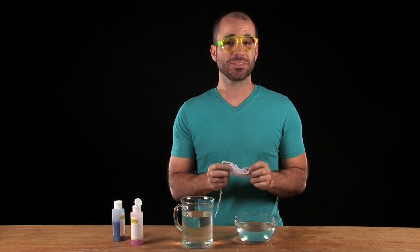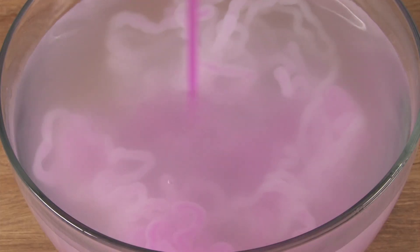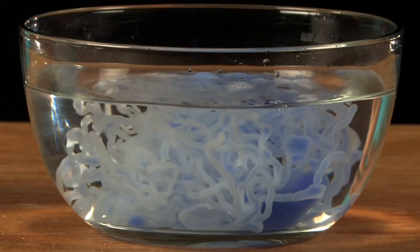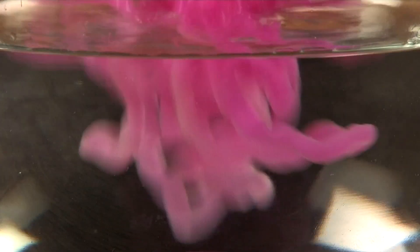And you may have also noticed something else about the worms. The worm goo turned clear when it hit the warm water. Well, if you'll remember, these are called heat-sensitive insta-worms. And when the worm goo hit the warm water, they changed color.